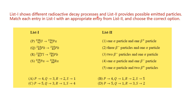List 1 shows different radioactive decay processes and List 2 provides possible emitted particles. Match each entry in List 1 with an appropriate entry from List 2 and choose the correct answer. We are given two lists or two columns — List A has a set of nuclear reactions and List B shows the different types of particles emitted. We are asked to match them. Before we go into solving this question, there are some basic fundamental notations and information we must understand about nuclear reactions. We will see that first.